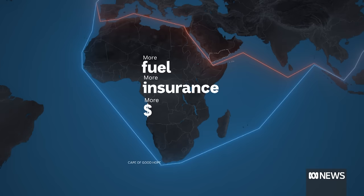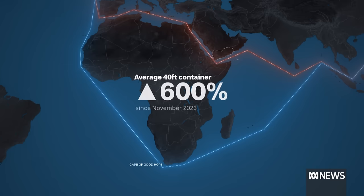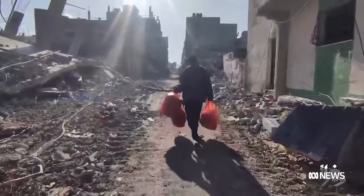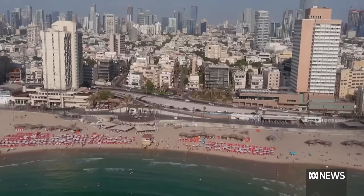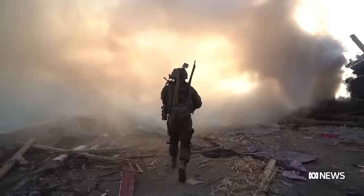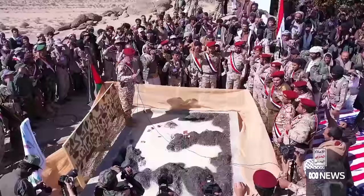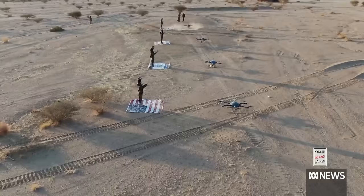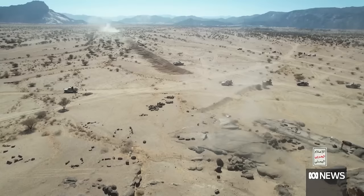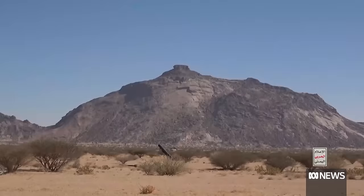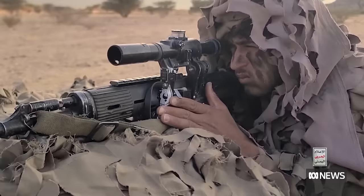It's driven up prices for the average shipping container by 600% and sent oil prices above $80 a barrel, threatening the global economy. There are suggestions that attacks on ships through the Red Sea are intended to cause economic pain for Israel, to pressure it into a ceasefire. The airstrikes by the US and the UK, supported by Australia, show that tensions could escalate in a region already struggling with the war between Israel and Gaza. One huge fear is that this high-stakes conflict could also draw in Saudi Arabia and Iran, transforming the war into an all-out regional dispute.